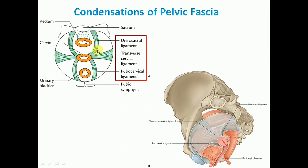The utero-sacral ligaments are important in keeping the cervix pulled backwards against the forward pull of the round ligaments. These two ligaments form a couple that maintain the uterine axis. Anteriorly lies the pubocervical ligament, laterally the transverse cervical ligament, and posteriorly the utero-sacral ligament.